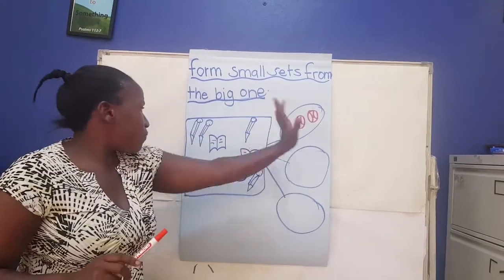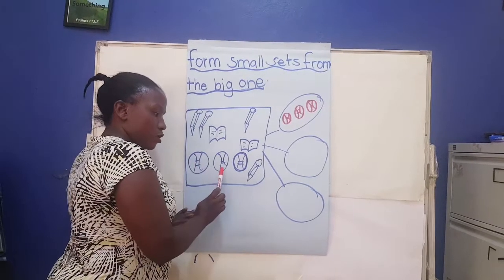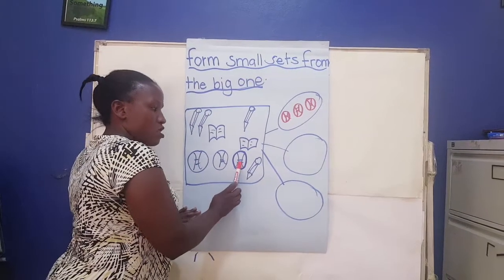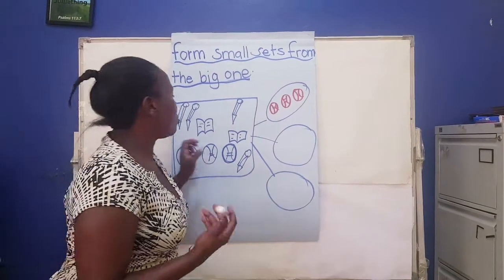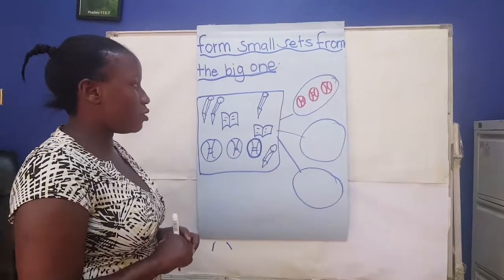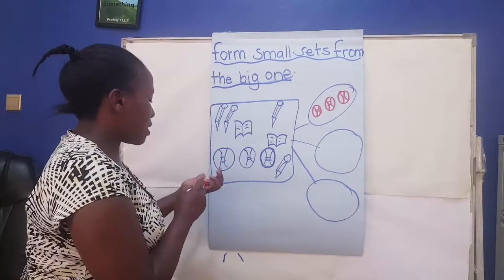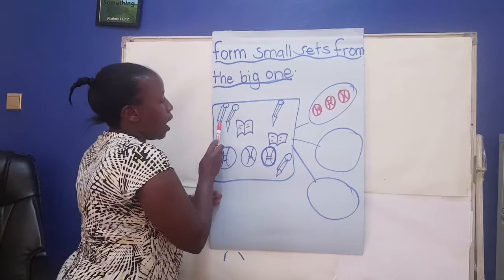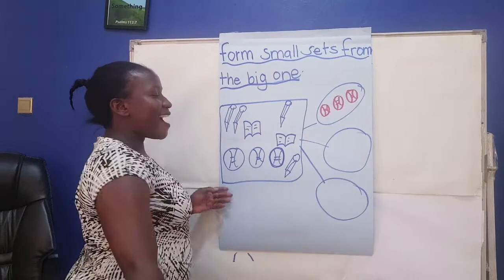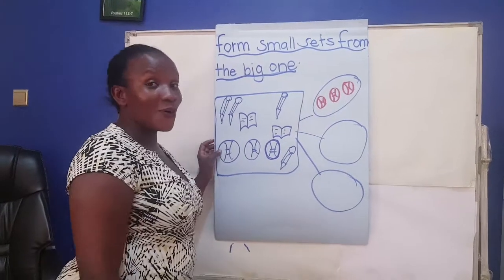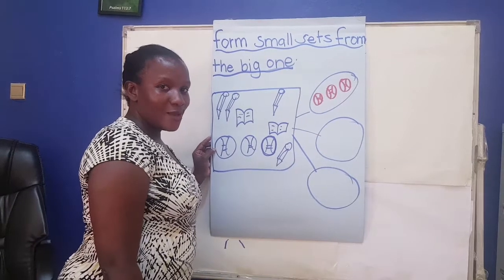Let's see if the three balls are the ones in the bigger set. One, two, three balls. Very good! Thank you, good children. Now which set should we go to? A set of pencils. Let's count together. One, two, three. Are they three pencils? No.